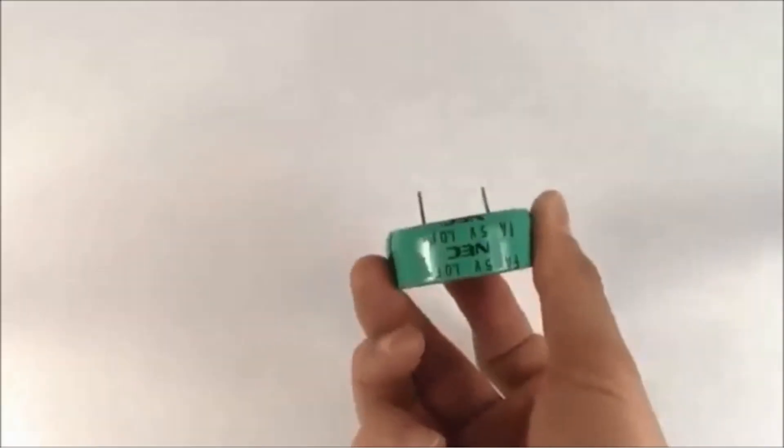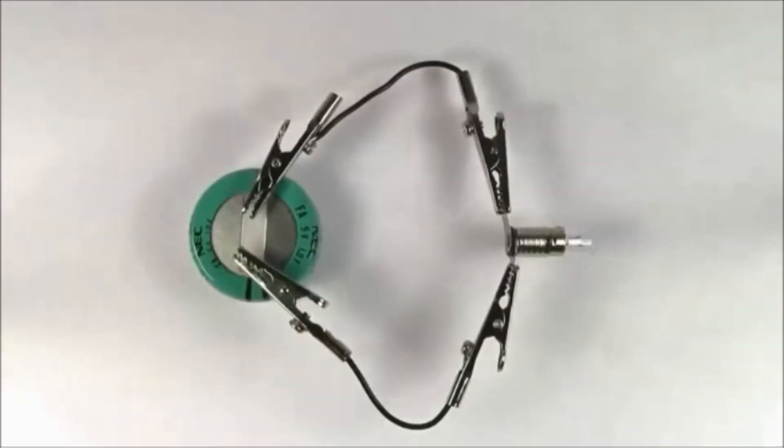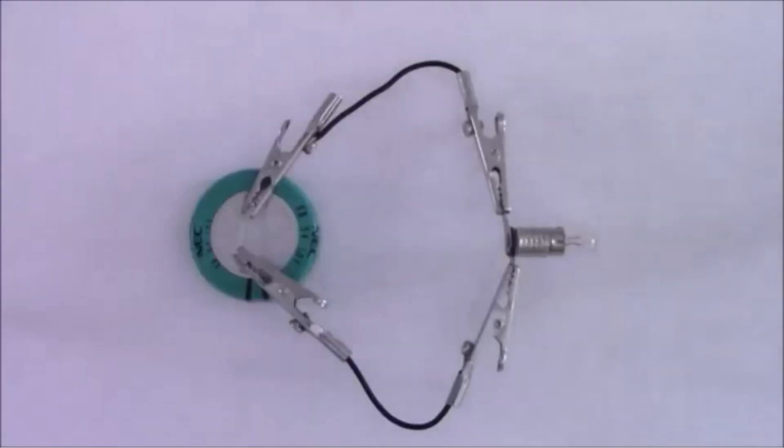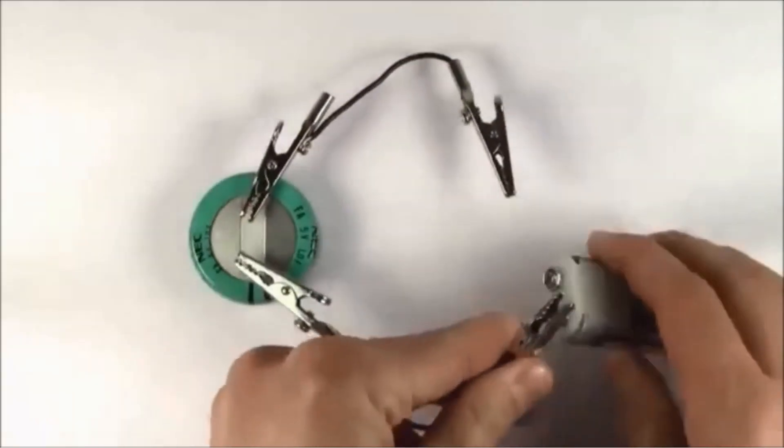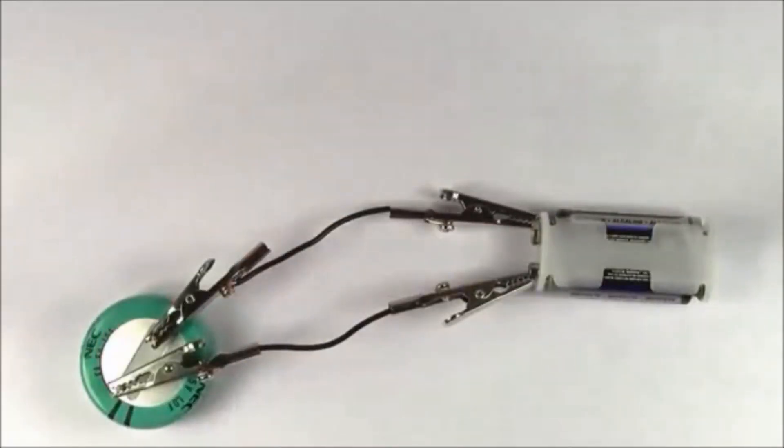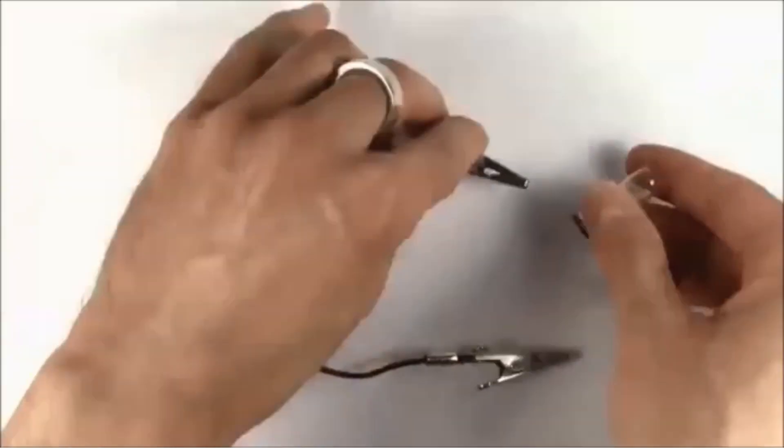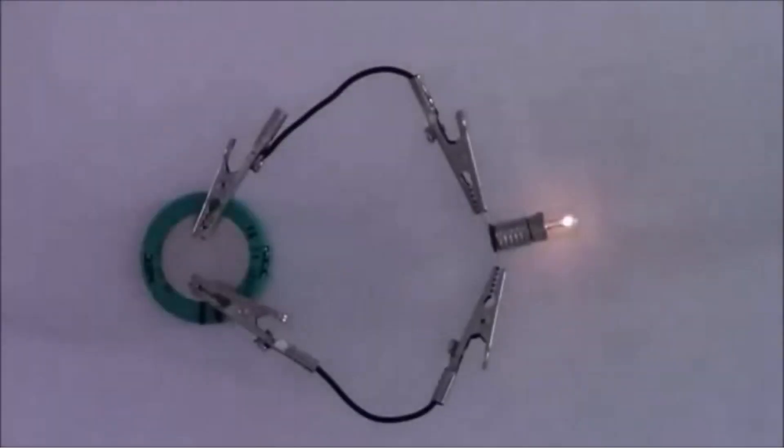Check out this capacitor. Look at what happens if I hook it up to this light bulb. Boom! Yeah, nothing happened because the capacitor is not charged up. But if we hook it up to a battery first to charge up the capacitor, and then hook it up to the light bulb, the light bulb lights up.